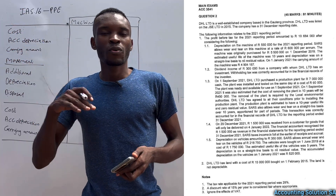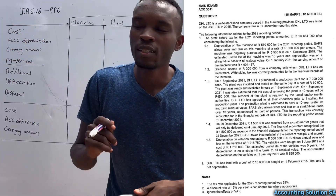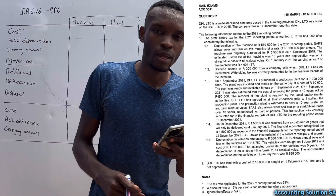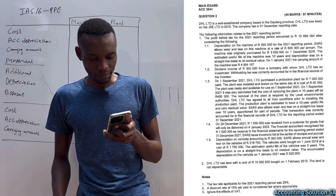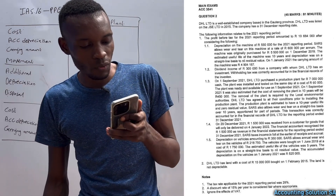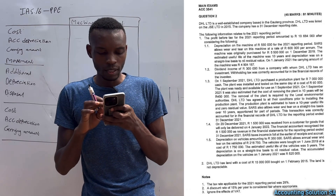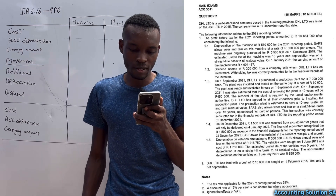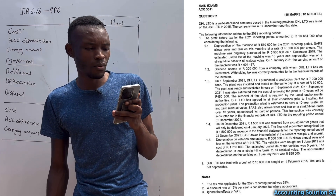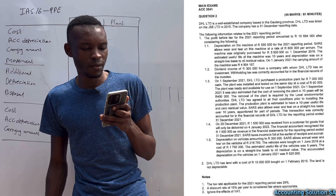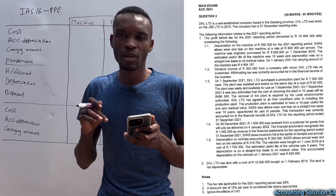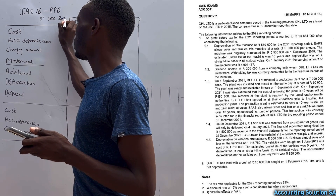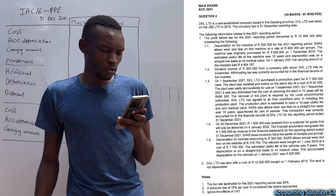In this video we are going to do IAS 16. Under IAS 16 we are going to prepare Property, Plant and Equipment. I picked two transactions which are transaction 1.1 and 1.3. The company is DHL Ltd, a well-established company based in Gauteng province, listed on JSE Ltd in 2015, with a year end of 31 December 2021.